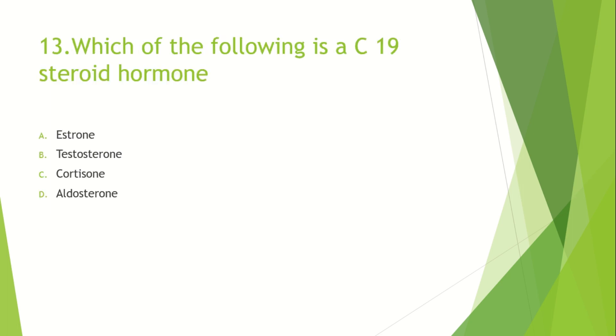Which of the following is a C19 steroid hormone? Option A: Estrone. Option B: Testosterone. Option C: Cortisone. Option D: Aldosterone. The answer is Testosterone.